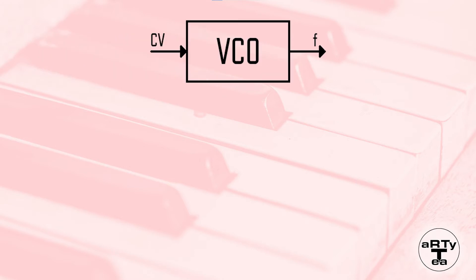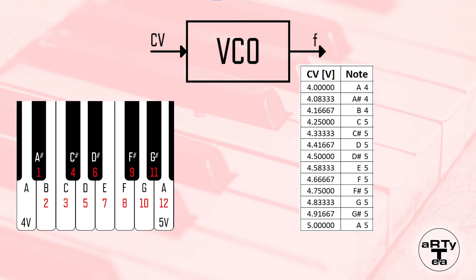In Euro-Rack, there is a standard for the voltage that controls the oscillator pitch. This is called volt per octave. This concept was introduced by Bob Moog in the 60s and has become the Euro-Rack standard for control voltages that determine the frequency at the oscillator output. One volt per octave simply means that for a raise of one volt in control voltage, the oscillator's frequency must raise one octave. For example, the pitch that corresponds with a 5 volt CV input must be exactly one octave higher than the pitch that corresponds with a 4 volt CV input. An octave contains 12 notes, meaning every note in an octave is represented by a voltage that differs 1 twelfth of a volt from its neighbor.